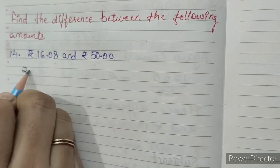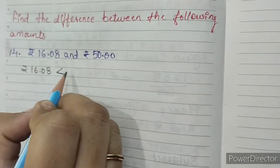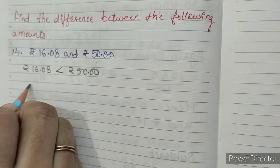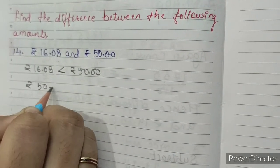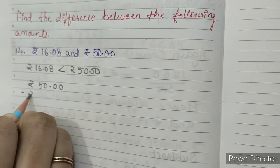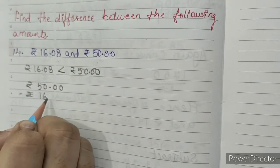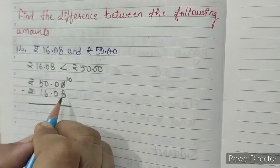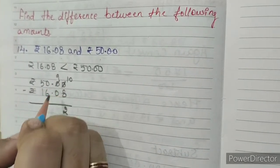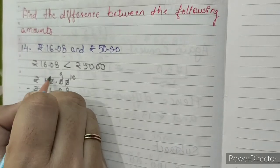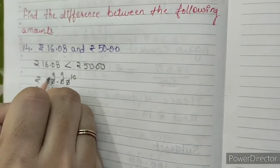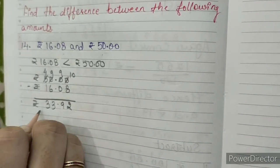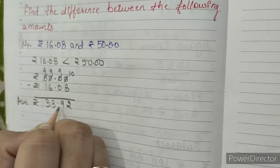Rupees 16.08 is less than rupees 50.00. So first of all we will write the bigger amount: rupees 50.00 minus rupees 16.08. So 10 minus 8 is 2, 9 minus 0 is 9, 9 minus 6 is 3, 4 minus 1 is 3. So our answer is rupees 33.92.